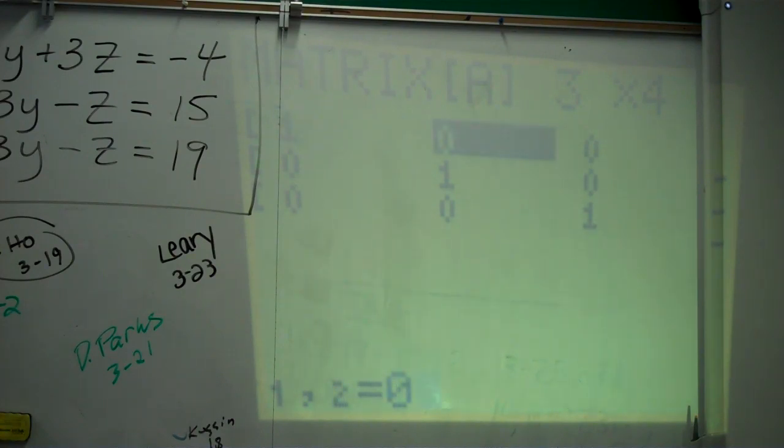And you can see the coefficients. One, negative three, three, negative four. Two, three, negative one, one, fifteen. Four, negative three, negative one, and nineteen.